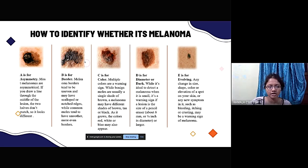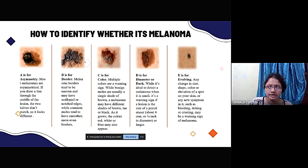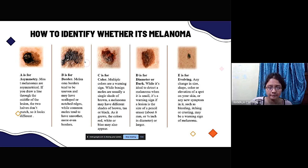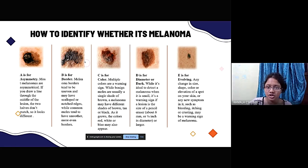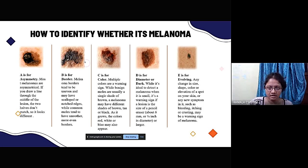B is for Border — melanoma borders are absolutely uneven and notched at the edges. C is for Color — color depends on the amount of melanin present and the skin tone. D is for Diameter — the affected area's diameter is notably more than six millimeters. E is for Evolving — that is, changing in size and shape over time.